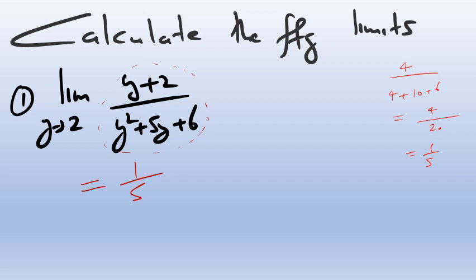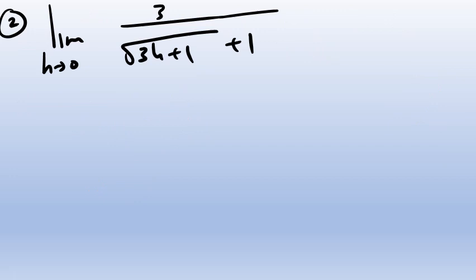Next question involves square roots. Direct substitution: on top we'd have 3, and on the bottom we have 3 times zero, that's the root of 1 + 1 as h tends to zero, which gives me 2. That gives a beautiful answer of 3 over 2.